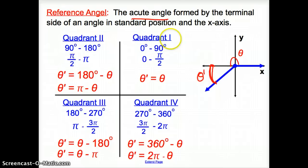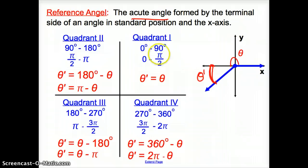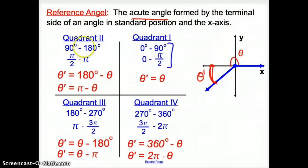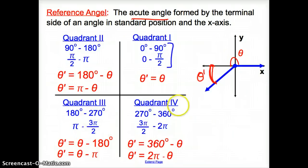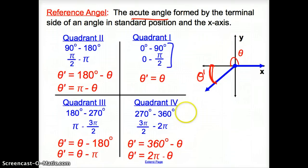Let's cover our quadrants. Quadrant 1 is from 0° to 90°, or in radians, 0 to π/2. Quadrant 2 is from 90° to 180°, or π/2 to π. Quadrant 3 is from 180° to 270°, or π to 3π/2. Quadrant 4 is from 270° to 360°, or 3π/2 to 2π. To find our reference angles, we're going to be using what's in red.